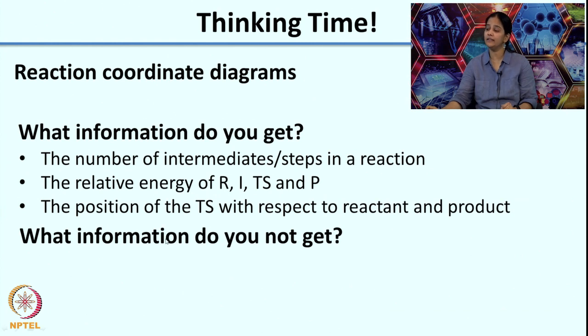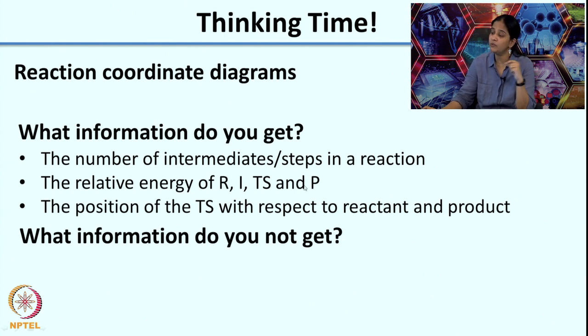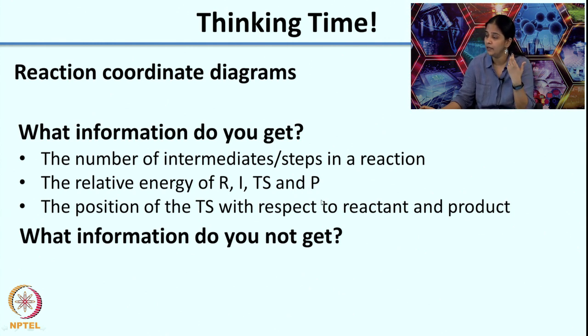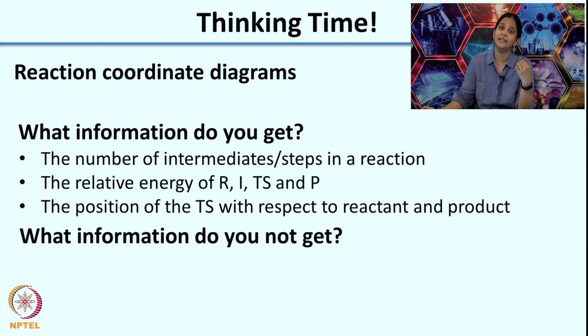I would hold on regarding what information you do not get, because although I have listed out all the things you get from a reaction coordinate diagram, it is very important to see the meaning behind all this. What can you do by understanding the relative energy of R, I, TS, and P? What do you understand by the position of the transition state? So let us try to get more details on these points before we get to what information you do not get.